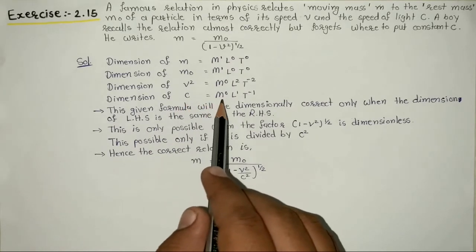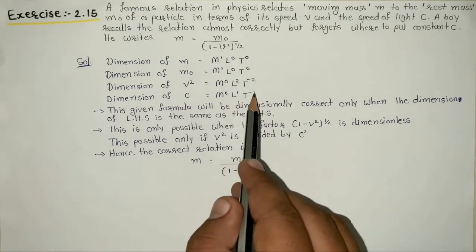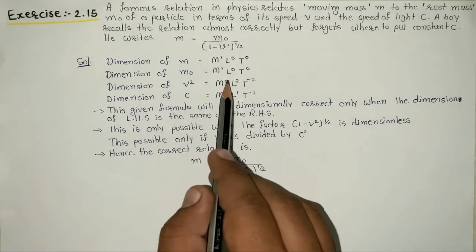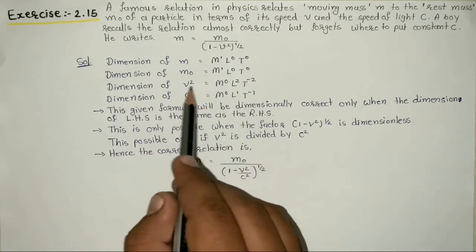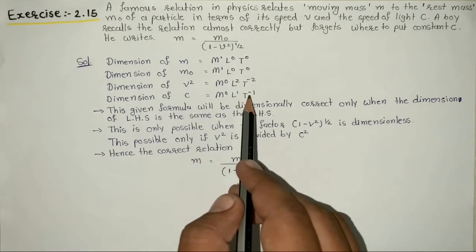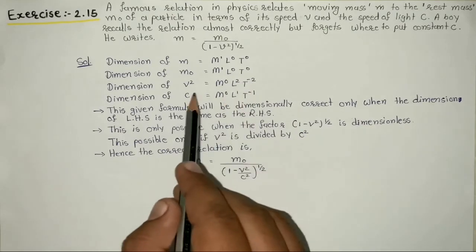v square is M⁰L²T⁻². If we divide by c, when these divide, L¹T⁻¹ will still remain. That means we need to divide by c square in the denominator.